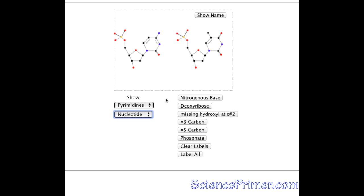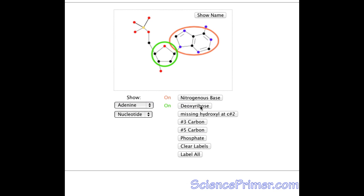The buttons on the lower left highlight significant features. These are the nitrogenous base, the deoxyribose, the carbon missing the hydroxyl group, the number three and number five carbons that make up the backbone of polynucleotides, and the phosphate group.